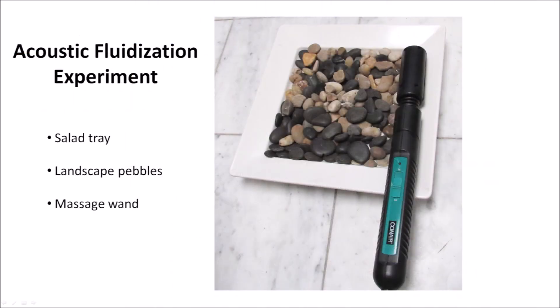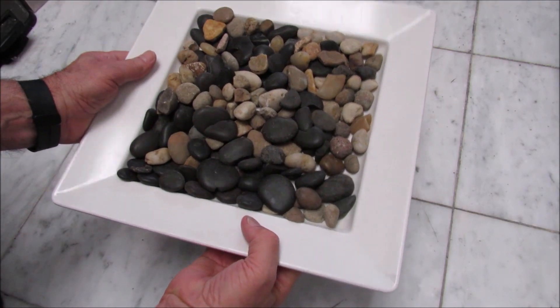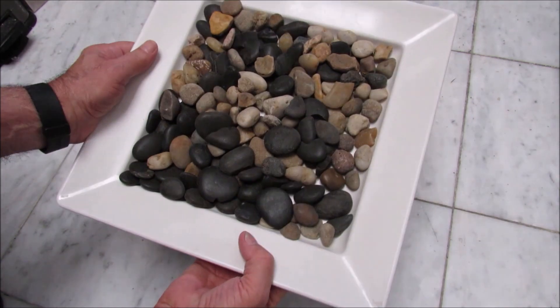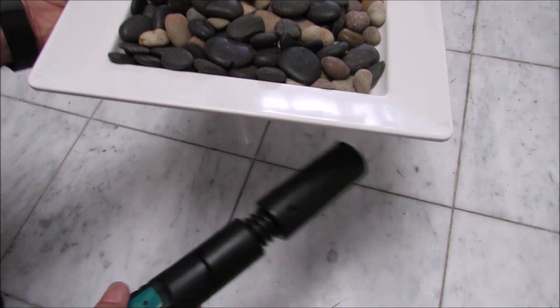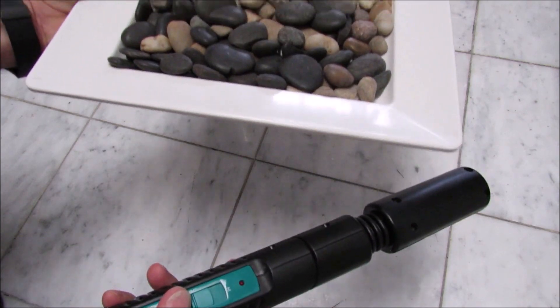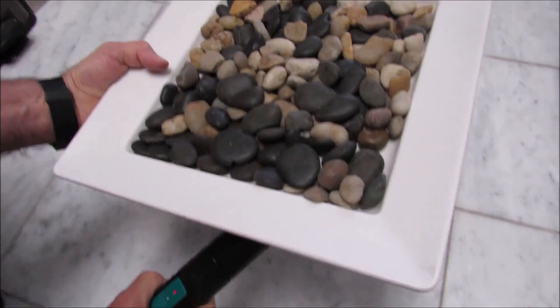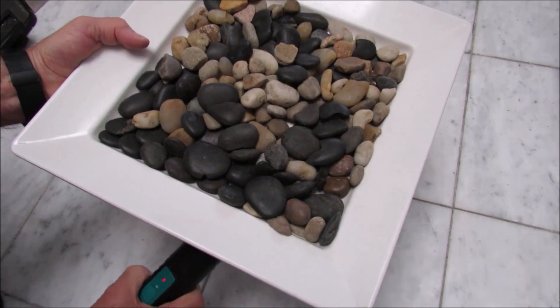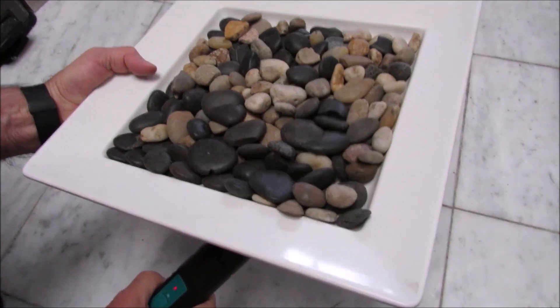I am going to demonstrate how acoustic fluidization works with a simple home experiment. All we need is a shallow salad tray, some landscape pebbles, and a massage wand. When we lift the tray with the rocks and tilt it in several directions, the rocks stay in place. The friction of the rocks with the tray and the friction between the rocks keep the rocks from moving. We turn on the massage wand. When we touch the wand to the bottom of the tray, the rocks start bouncing. Now if we tilt the tray like before, all the rocks start moving, overcoming the frictional forces. This is acoustic fluidization.